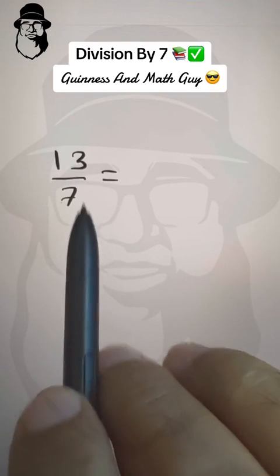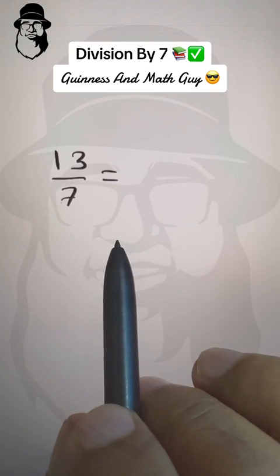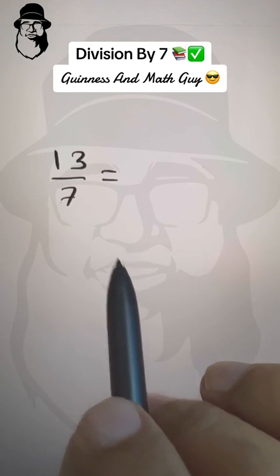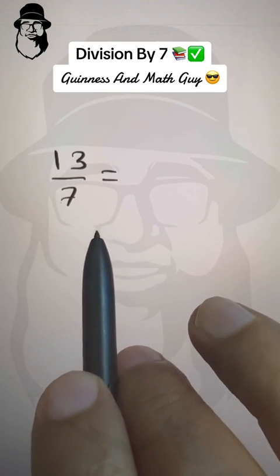Someone asked me how to divide 13 by 7 to 2 decimal places without using a calculator. So let me tell you a trick about 7.